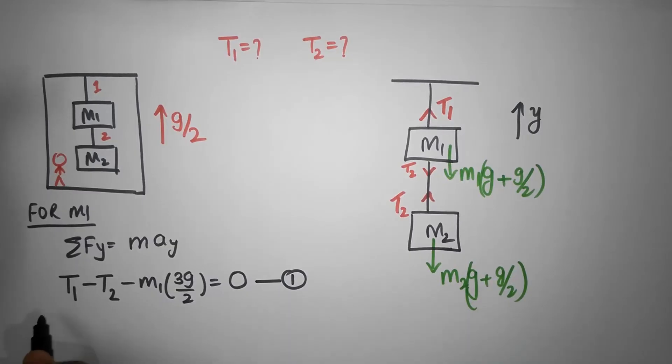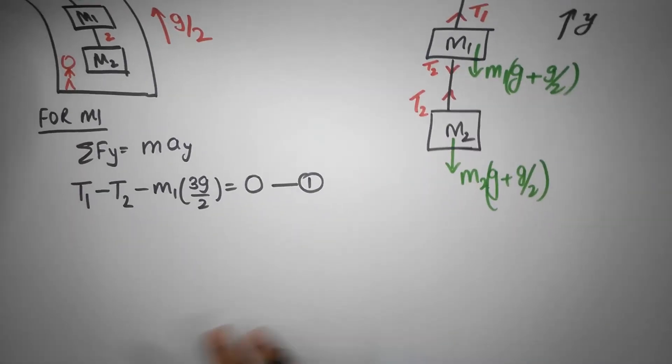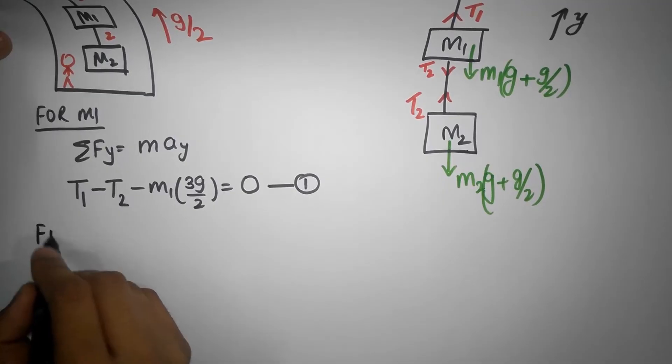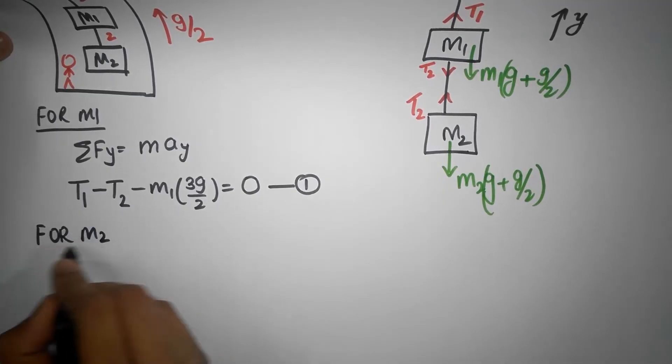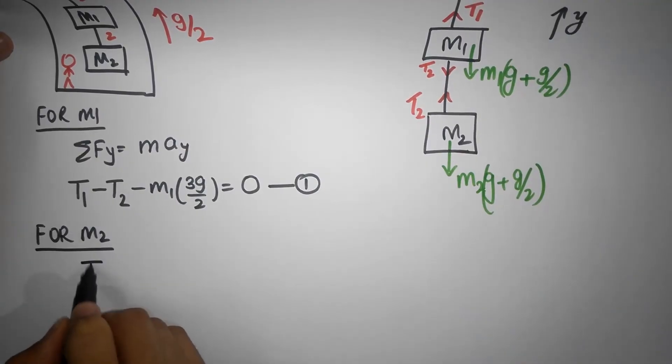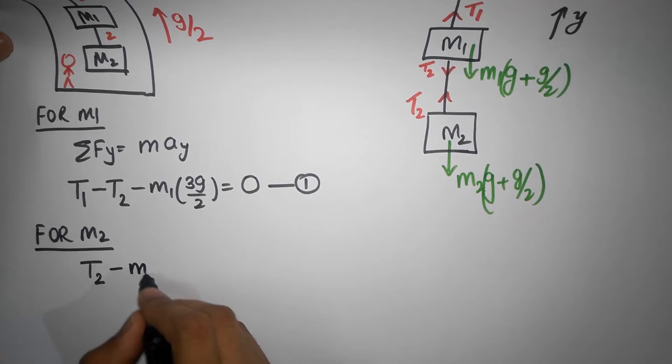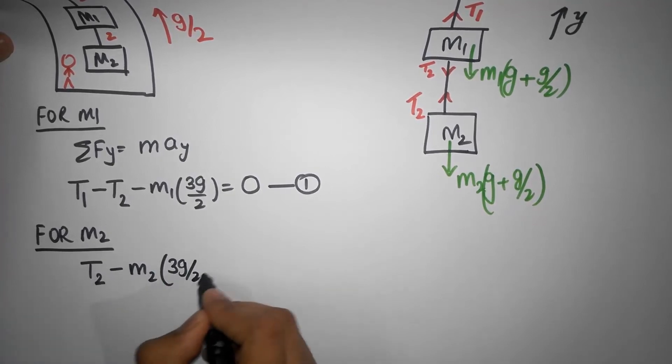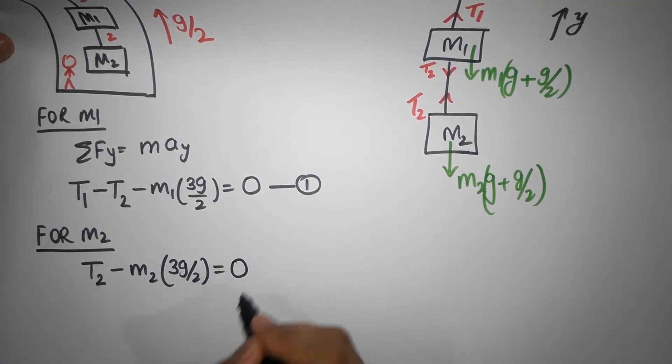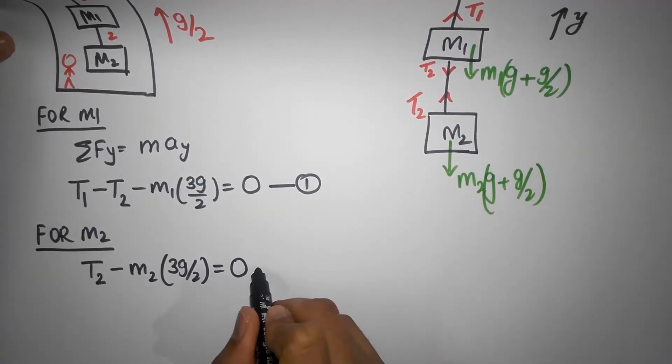If I apply this same thing to the second block, let me apply this to block number two, and now I would see there are two forces, one is T2 acting upwards and there's a minus m2 into 3g divided by 2, and that should be equal to zero again because no accelerations. So this is equation number two.